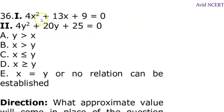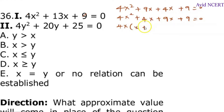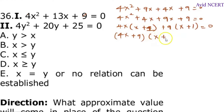The next problem is 4x square plus 13x plus 9 equals 0, and the second equation is 4y square plus 20y plus 25 equals 0. For the first equation, 9 times 4 is 36, and 9 plus 4 is 13, so it can be written as 4x square plus 9x plus 4x plus 9 equals 0. Taking the common term out: 4x into x plus 1, plus 9 into x plus 1 equals 0. So, 4x plus 9 and x plus 1 equals 0, giving x equals minus 9 by 4 or minus 1.